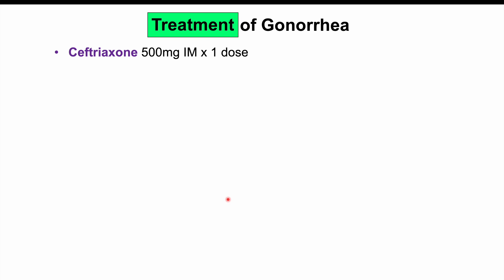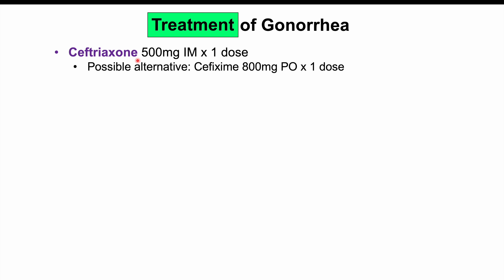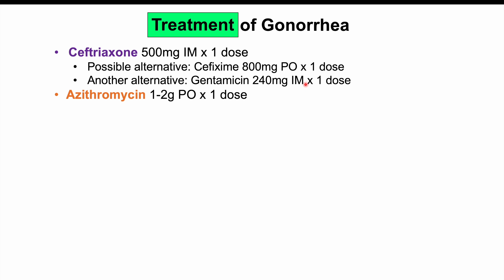Treatment of gonorrhea involves ceftriaxone 500 mg IM as a single dose. Alternatives include cefixime 800 mg PO as a single dose. For patients with a ceftriaxone allergy, gentamicin 240 mg IM as a single dose can be used.